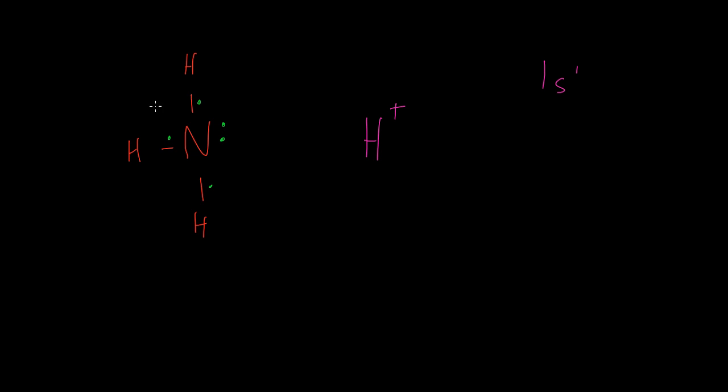If we form a coordinate bond between the lone pair and the s orbital of the hydrogen ion, so that now the hydrogen ion is 1s2 and the nitrogen has a full energy level, then we form the compound ammonium with four hydrogen atoms. And this is a coordinate bond.